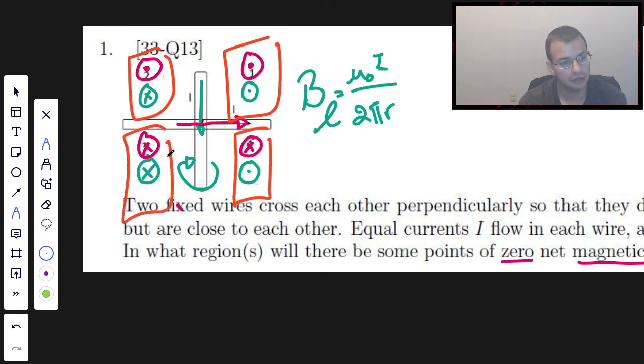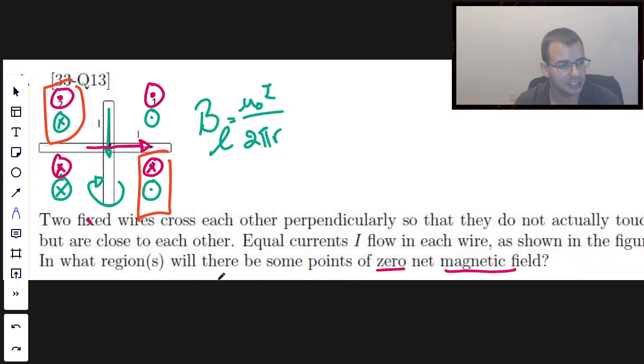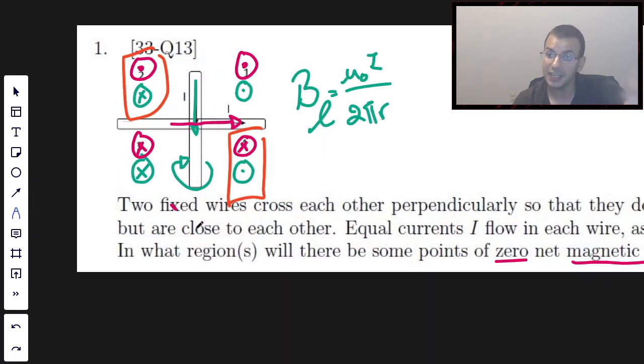The only way that these two quadrants could be zero is if current I was zero, and we're going to kind of assume that it's not zero. Otherwise the problem would be kind of silly. So that's how I would approach this problem. Hope it helped. See you next time.